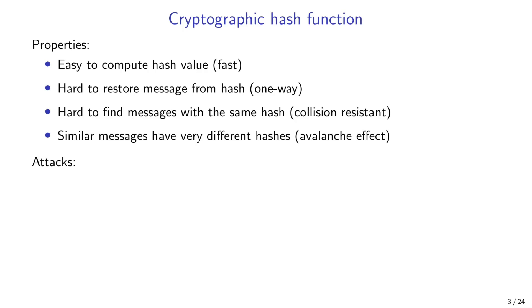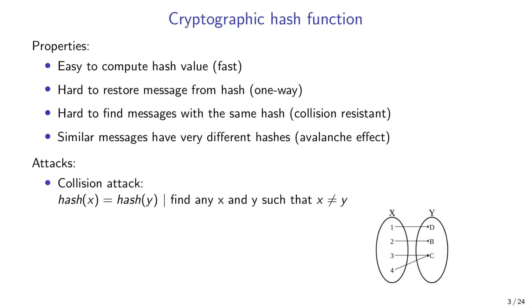There are three main attacks against cryptographic hash functions. The first is a collision attack, which means finding x and y which are different such that their hash values are the same. In a visualization of an example hash function, we can see how input values map to output values — two input values produce output value c. The collision attack is successful if we find input values 3 and 4 which map to the same output c. This is usually the first successful attack against cryptographically weak hash functions.